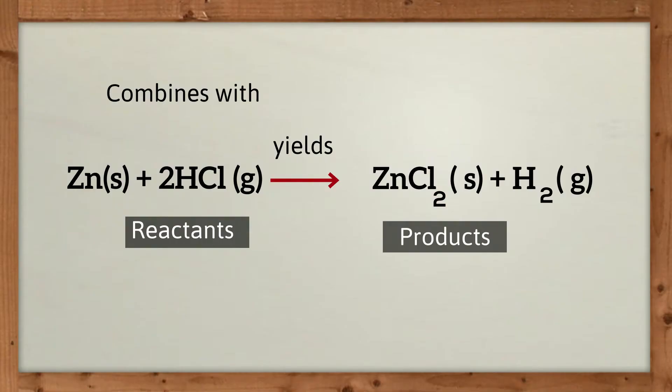Here's an example. You have non-metal hydrogen displaced by the metal zinc. It produces zinc chloride and hydrogen gas.